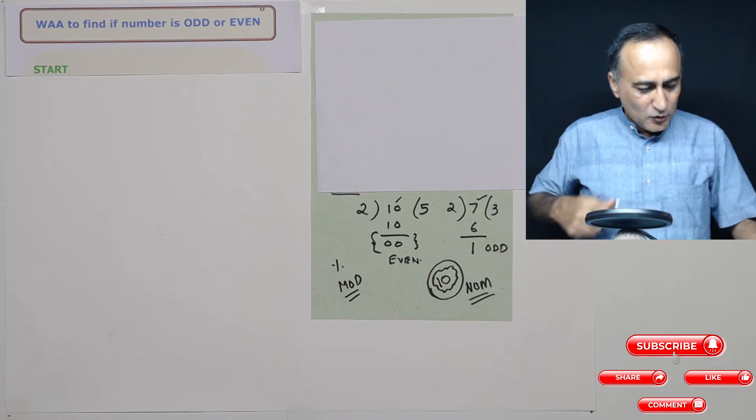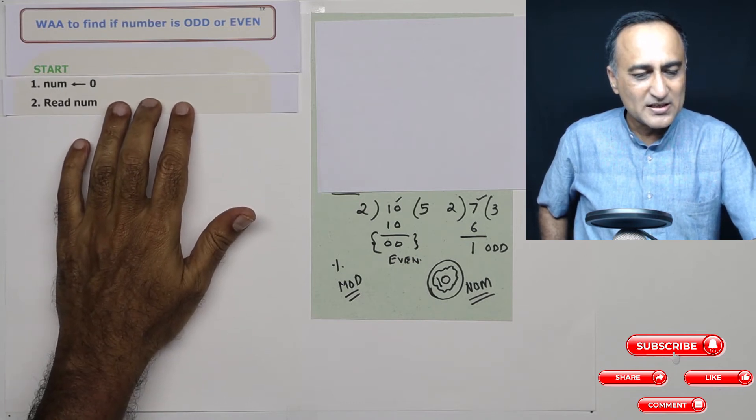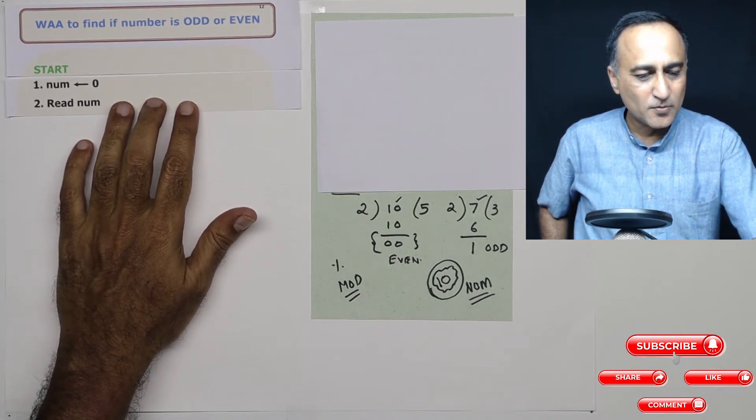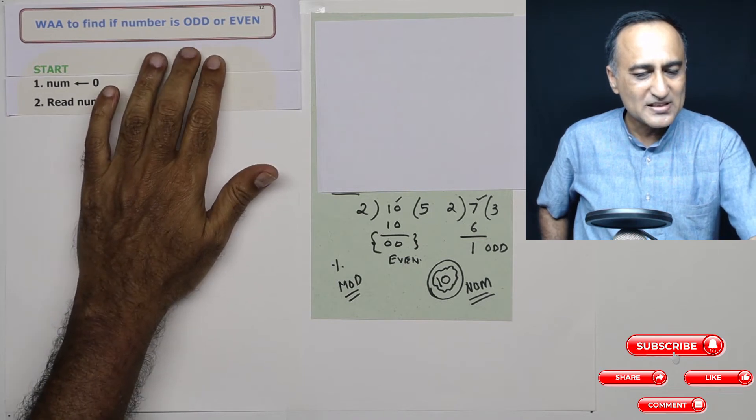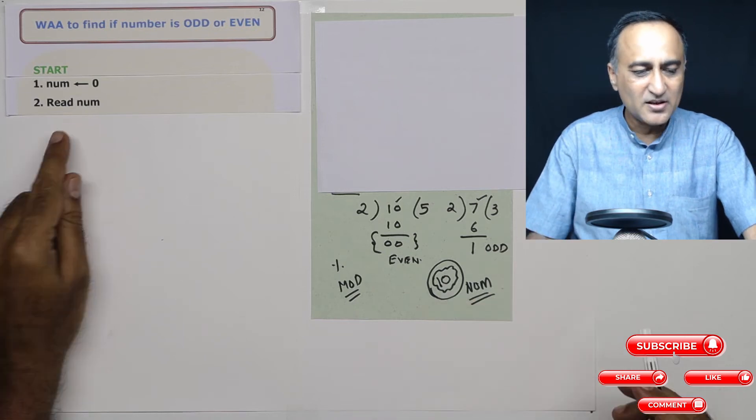So let's try to go through the logic. So the first step is I am declaring a variable called number whose value is zero. The next step, what I am doing is I am reading a number from the keyboard. So some number is entered by the user.